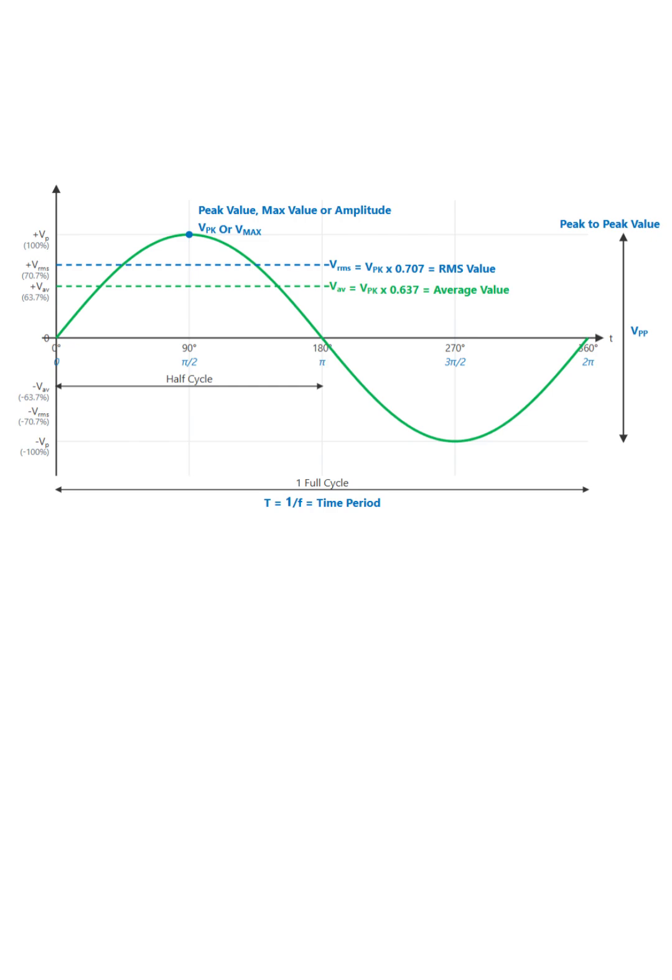So, the average value shown here refers to the average of just one half cycle. This value is about 63.7% of the peak value, or the peak value multiplied by 0.637.